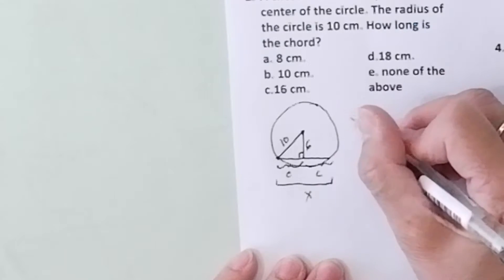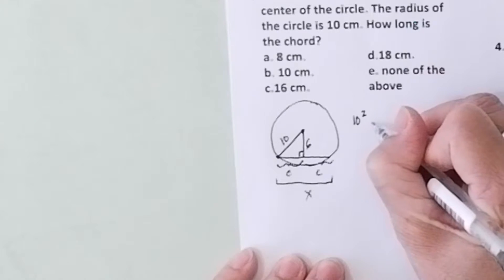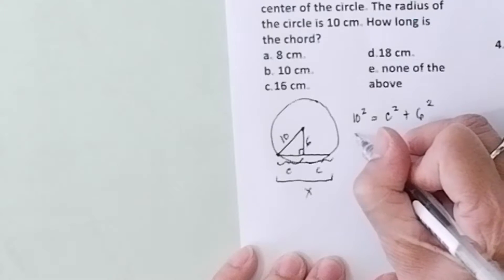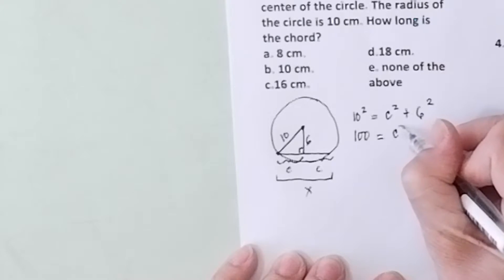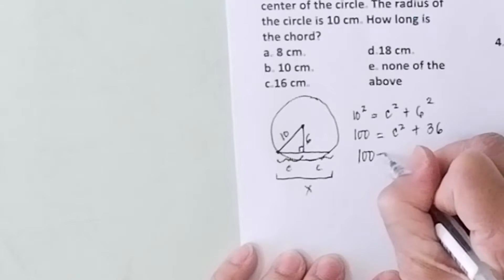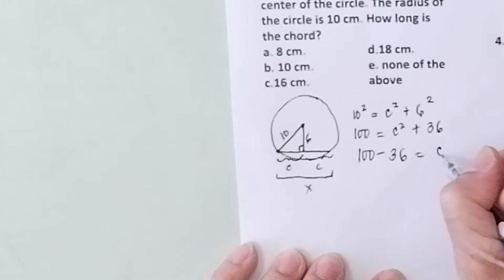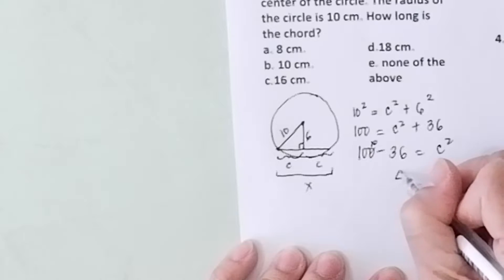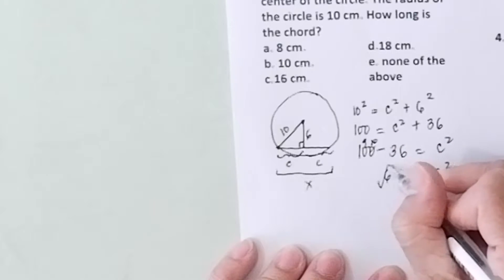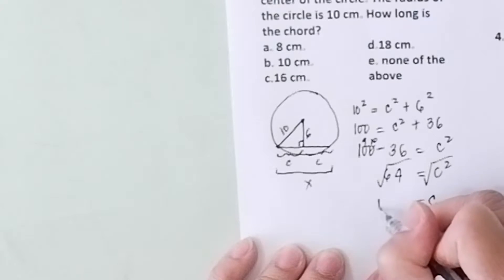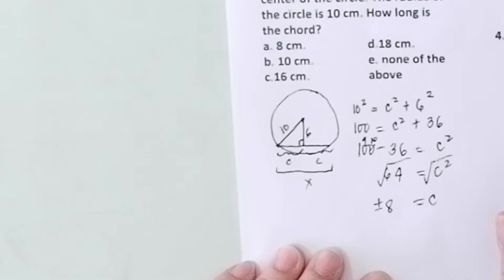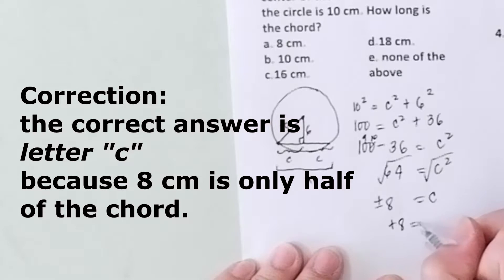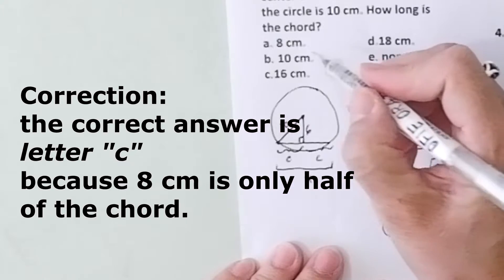You can now use the Pythagorean theorem: 10 squared equals C squared plus 6 squared. So 100 equals C squared plus 36. Transpose 36: C squared equals 100 minus 36, which is 64. Take the square root of both sides — C equals plus or minus 8. But negative 8 cannot be the length of a line segment, so C equals positive 8, or 8 cm. The answer is letter A.